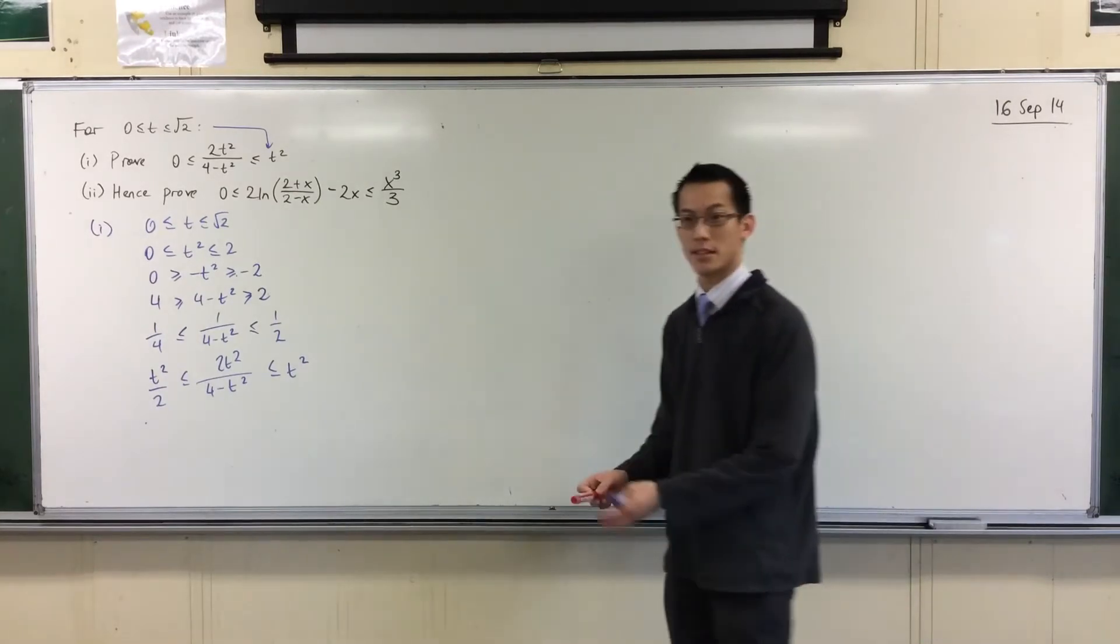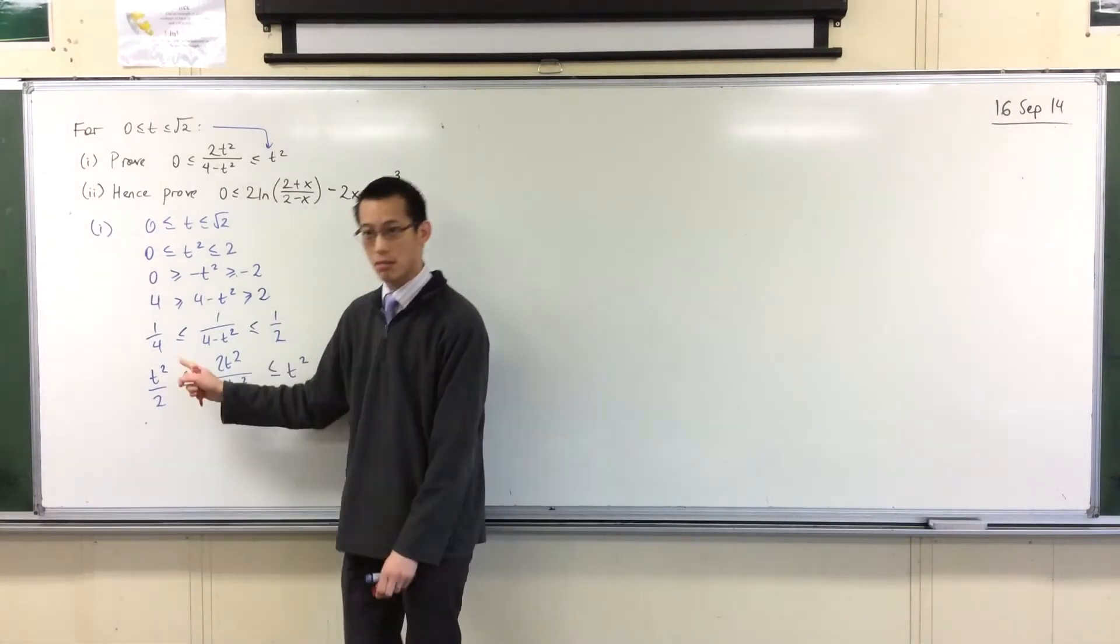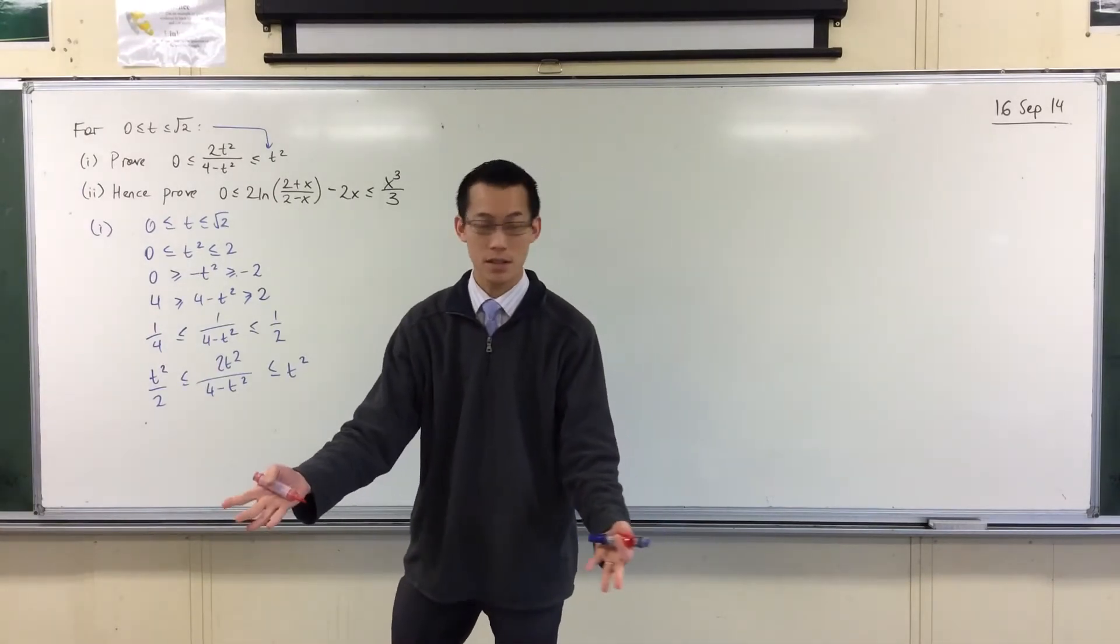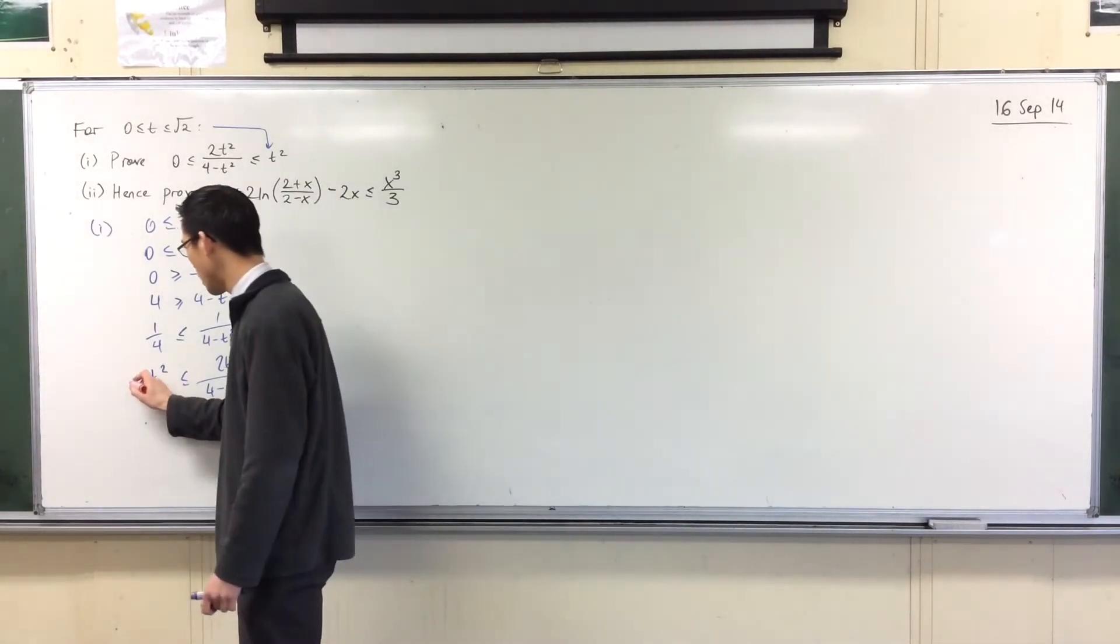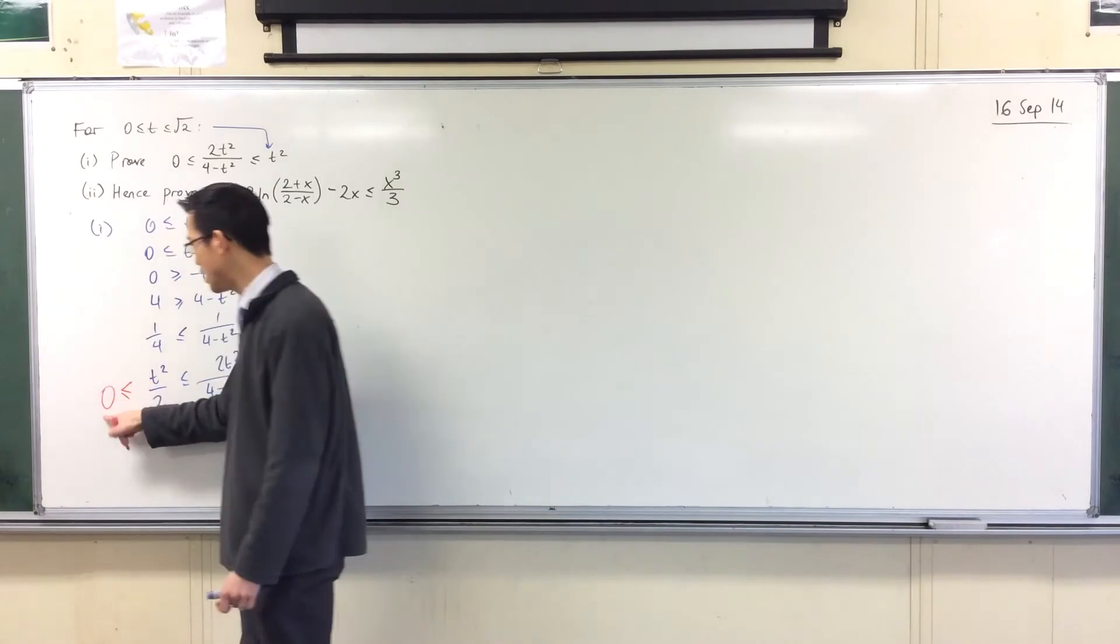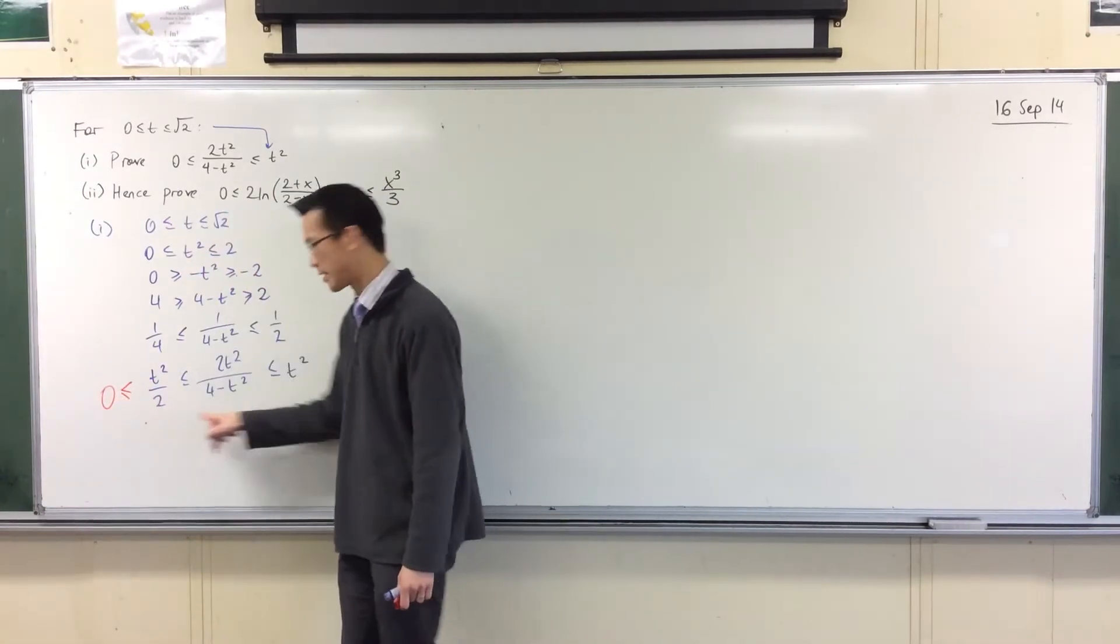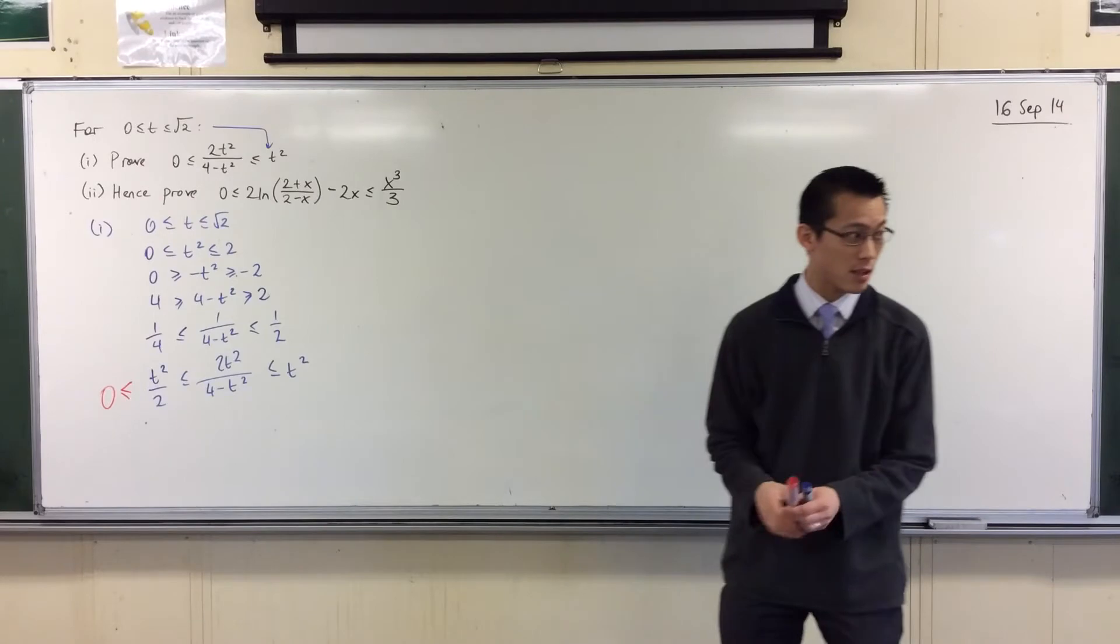Here's the way that I would lay it out. You could do this a couple of different ways. I think this is the simplest. T squared on two is positive, right? It's positive. So therefore, what I'm going to just pop over here is, well, zero must be less than that. And that's less than that. And that's less than that. Okay? I think this is the easiest way to do it.